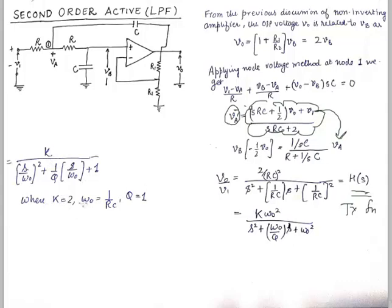And K here is 2. And we also see that ω0 becomes equal to 1 upon RC. Q is 1, the quality factor from this equation, by the way, just comparing the standard equation.